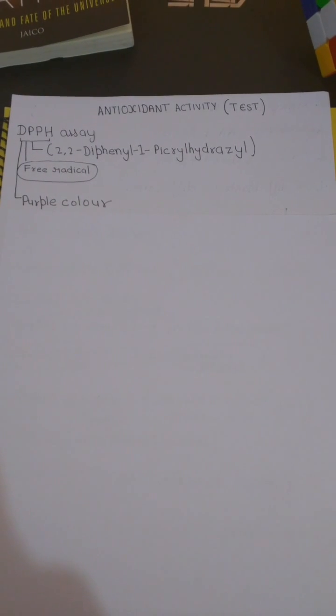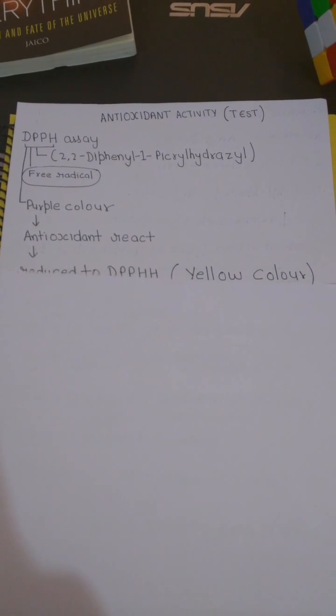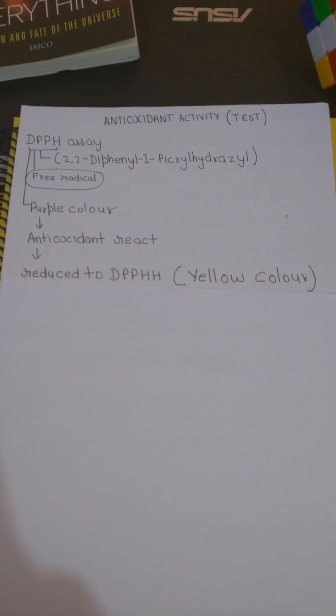DPPH actually stands for 2,2-diphenyl-1-picryl hydrazyl and it is a kind of free radical. The color of DPPH is purple. What happens is that if your plant extract is an antioxidant, then it will act on it and reduce it to DPPHH which is yellow in color.